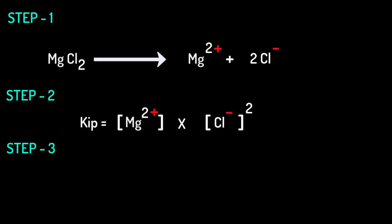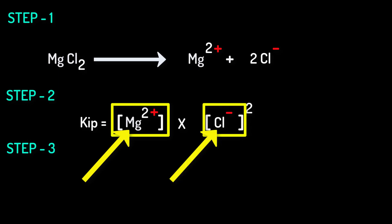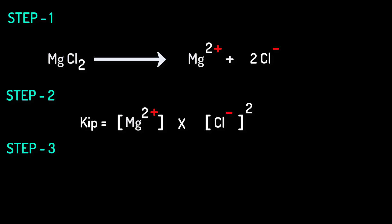Note that we will get the value of the concentration of this cation and the value of the concentration of this anion given in the question. By using those given values we will easily be able to calculate Kip for magnesium chloride.